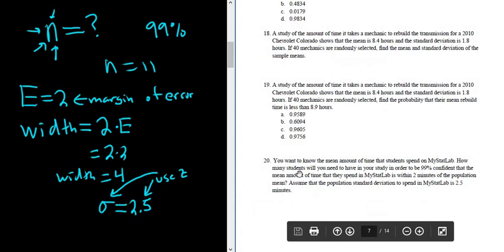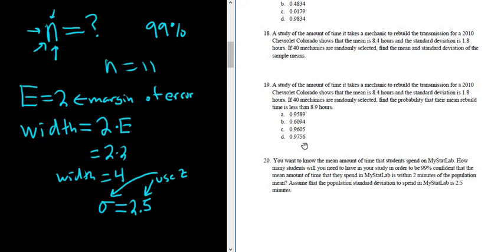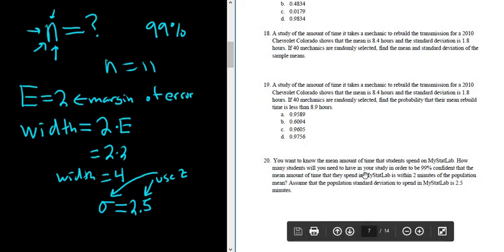Let's read it one more time. So again, the question is asking how many students will you need to have in your study, right? So what is the sample size? So we're looking for N to be 99% confident. And then it says that the mean amount of time that they spend in MyStatLab is within 2 minutes of the population mean. So whenever they're asking you for the sample size, they always have to give you E. So this number here, this 2, has to be the margin of error. Once you find that, automatically multiply it by 2.